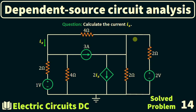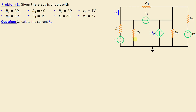Greetings, welcome to this new video about dependent source circuit analysis, problem number 14. We consider a network consisting of five resistors labeled R1 through R5, along with one independent current source and two independent voltage sources. Additionally, there is a dependent source — specifically a current controlled current source. The question is to calculate the current ix, which is the current through resistor R4.